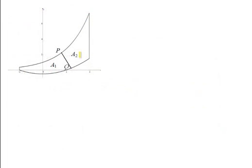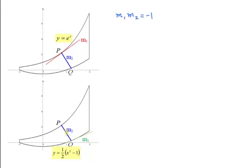The question tells us that PQ is a normal line at P and Q. This means that if m1 is the gradient of y equals e^x at P, and m2 is the gradient of line PQ, then m1 times m2 equals negative 1. Similarly, if m3 is the gradient of y equals half(x squared minus 1) at Q, then m2 times m3 equals negative 1.